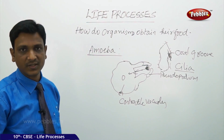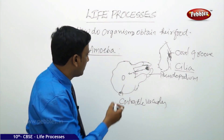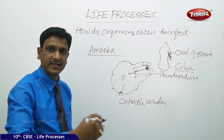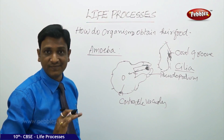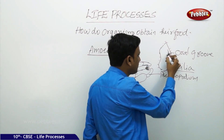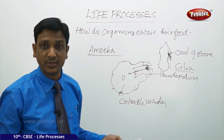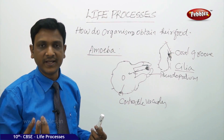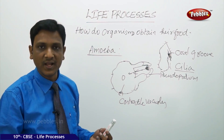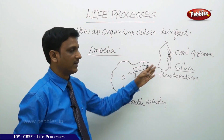Notice the difference between amoeba and paramecium. In amoeba, there is no specific spot for food intake — it can produce pseudopodia from any side and take in food. Whereas in paramecium, there is a specific side for food intake through the oral groove. Similarly, in humans, we have a specific entry point for food — the mouth. Food must enter the body through the mouth, not through the ears or hands.